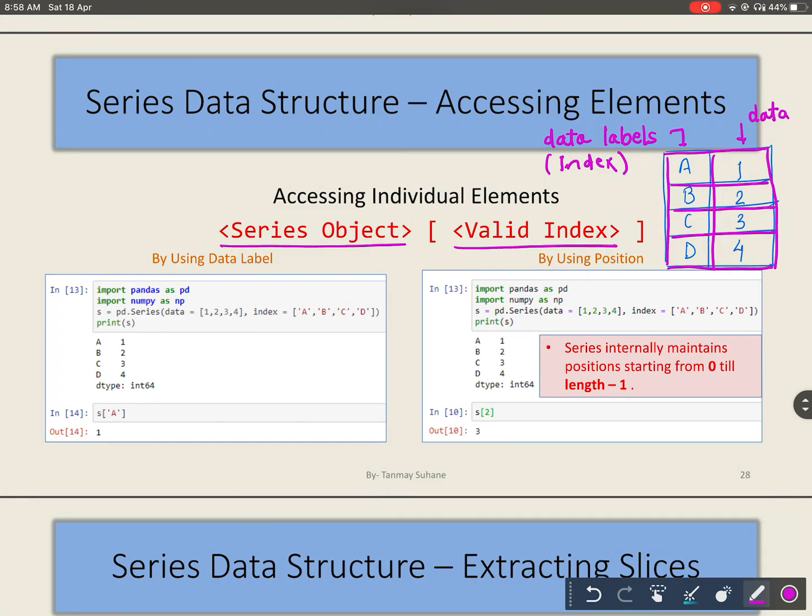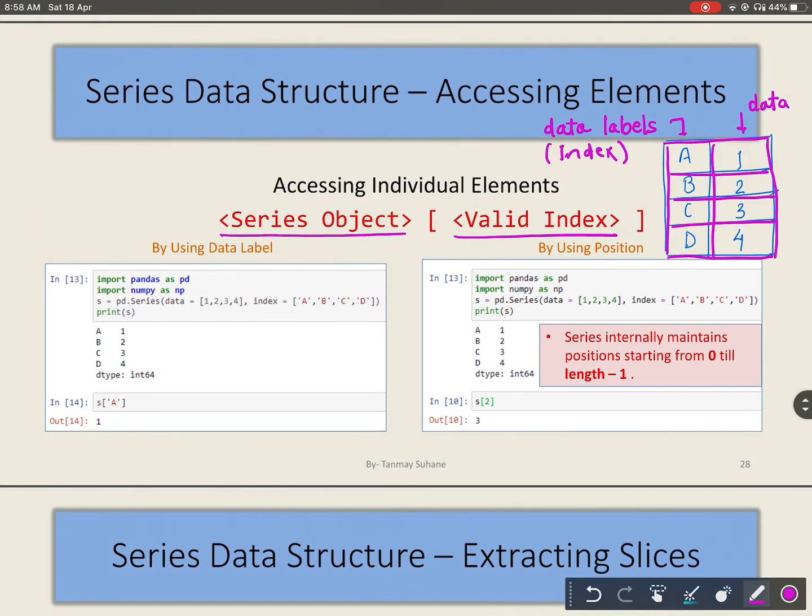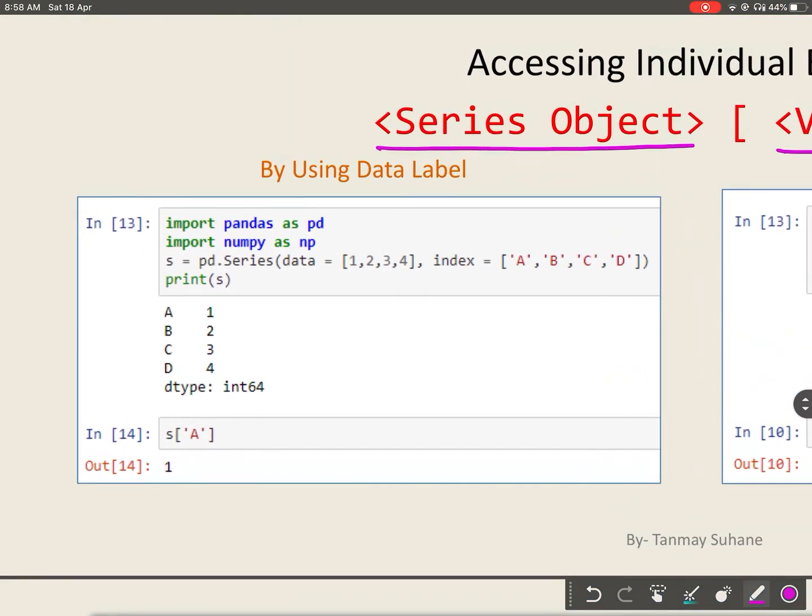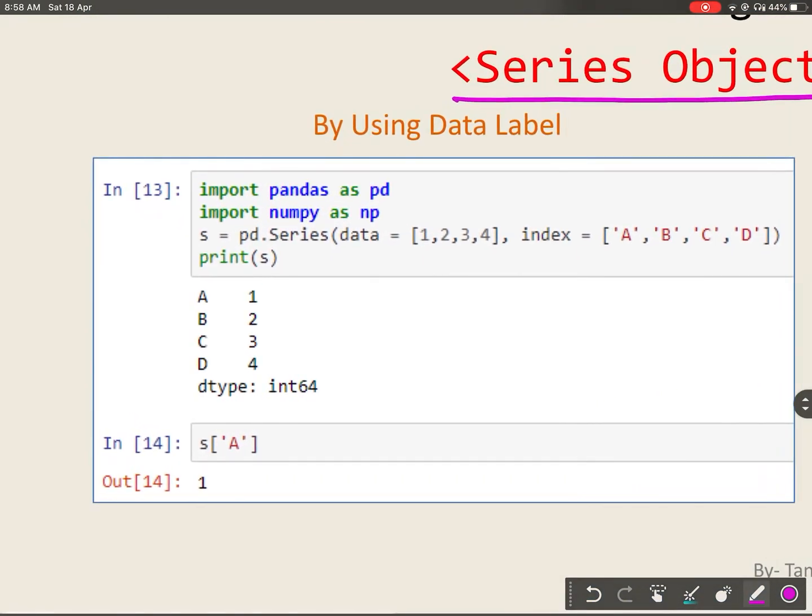The data labels or indexes you have to provide are what you have given at the time of Series creation. Consider this example where I am extracting data using data labels. If your data labels are A, B, C, and D, and you want to extract the element with index A, you can give s with index operators and inside that A, and it will give the data at that index.